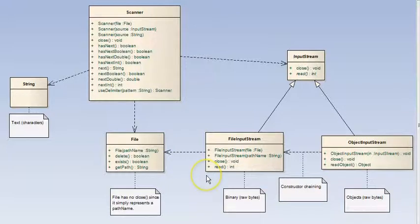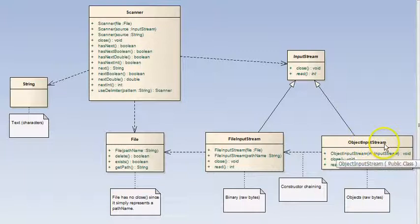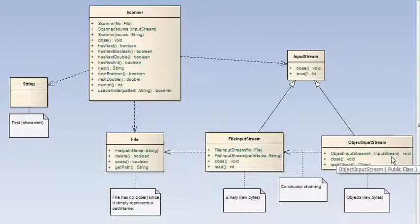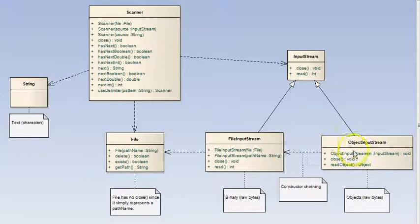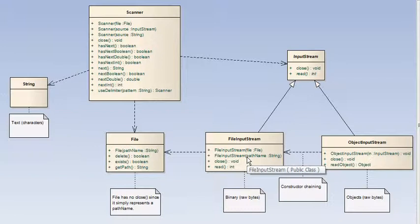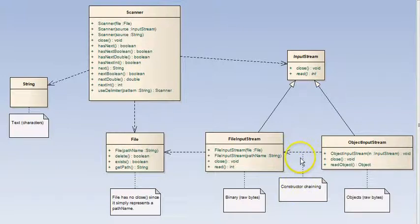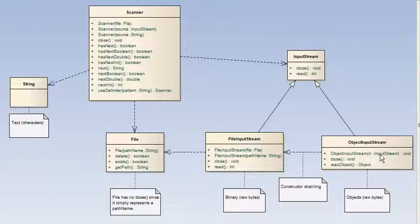The FileInputStream itself has a constructor for a File — it takes a file to chain to it, and also will take a string. The ObjectInputStream has a constructor that takes an InputStream — a particular one. For example, we have an example here of it perhaps using a FileInputStream as the place where it will source the objects from. This note here says this is constructor chaining — one example of it, where one constructor uses an object from another class, and they're chained together to provide the functionality.